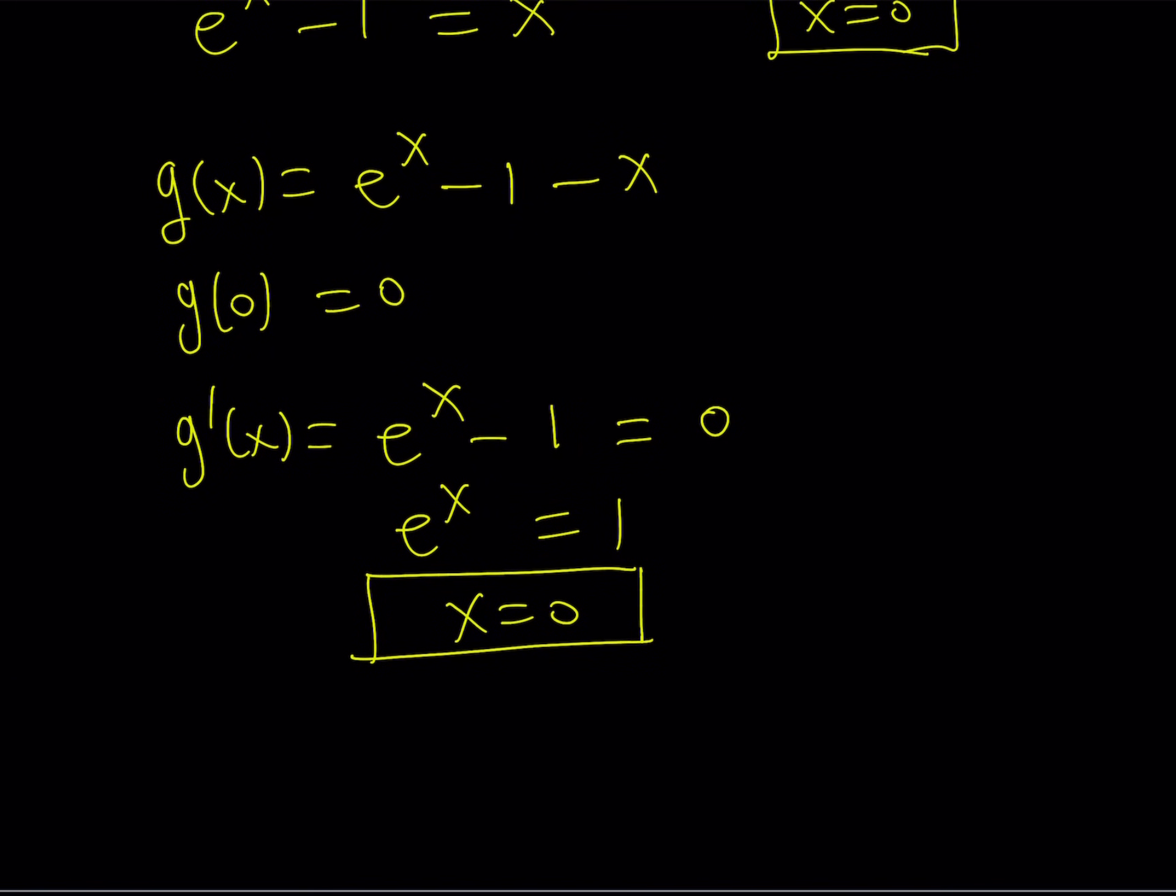Let's go ahead and find out what that looks like by looking at the table for the derivative of g of x. So the derivative has a root at 0. And we know that this expression, the derivative, is going to be positive if x is greater than 0 because e to the power x is going to be greater than 1 in that case.